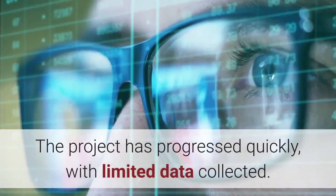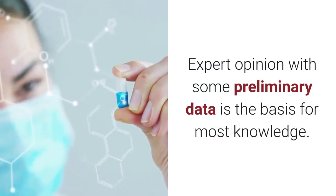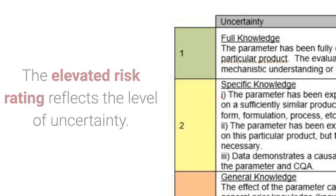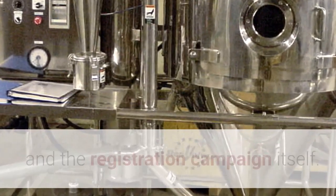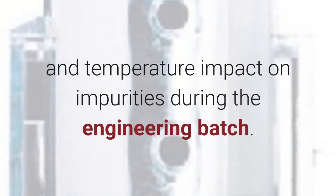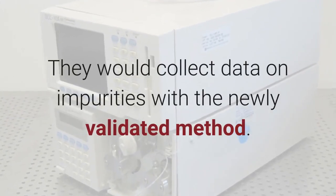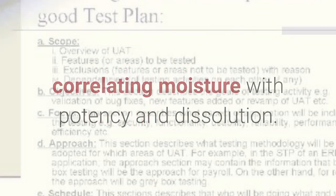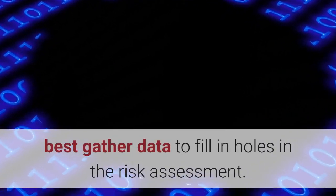The project has progressed quickly with limited data collected. Expert opinion with some preliminary data is the basis for most knowledge. The elevated risk rating reflects the level of uncertainty. The QRA identified some key areas of study for the pre-registration engineering batches and the registration campaign itself. In particular, the team decided to challenge the time and temperature impact on impurities during the engineering batch. They would collect data on impurities with the newly validated method. They also ensured the test plan included correlating moisture with potency and dissolution. The important lesson is the project team determined how to best gather data to fill in holes in the risk assessment.